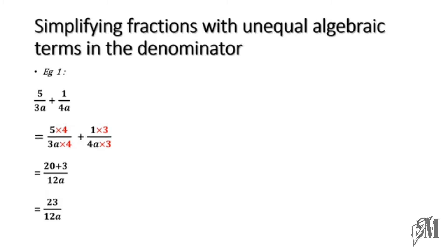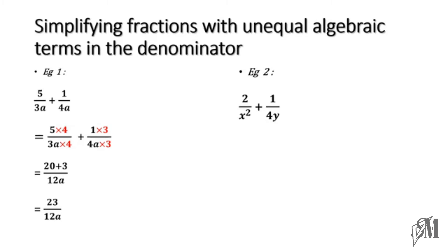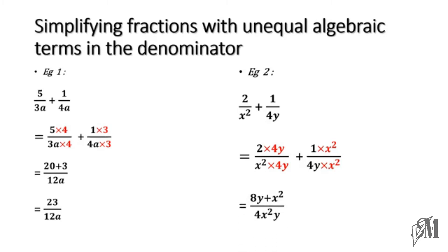Let's look at another example: 2 over x squared and 1 over 4y. In this case we have to think of the least common multiple of x squared and 4y, which will be 4x²y. In order to make the denominator 4x²y, the first fraction must be multiplied by 4y and the second fraction must be multiplied by x squared. Then you get the common denominator as 4x²y, where the numerator is 8y plus x squared.